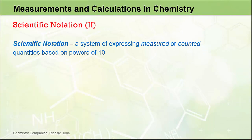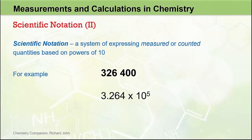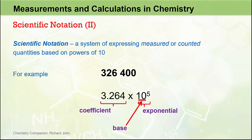Scientific notation is a system of expressing measured or counted quantities based on powers of 10. In the previous video, we were able to show that the number 326,400 can be represented in scientific notation as 3.264 times 10 to the 5. The 3.264 is called the coefficient of the number and the 10 to the 5 is called the exponential part of the number. More specifically, the 10 is the base of the exponential and the 5 is called the exponent.